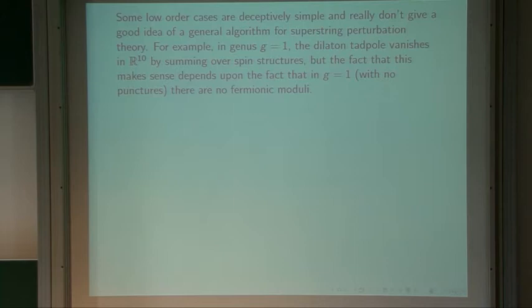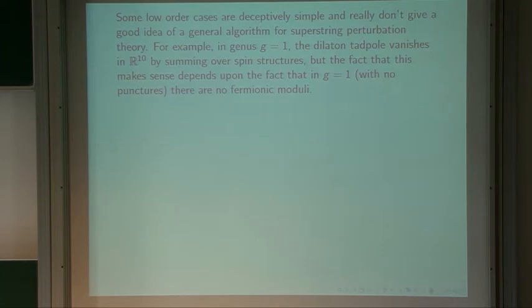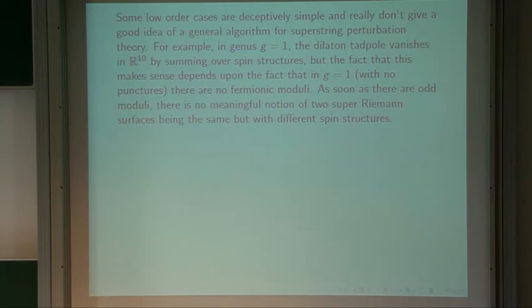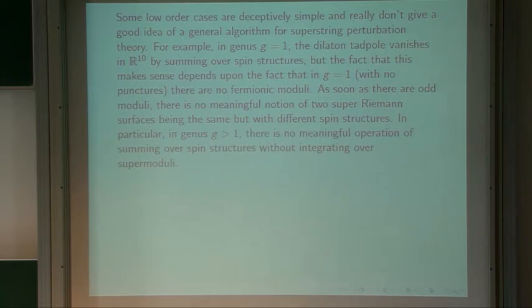For example, in genus 1 for string theory in R^10, the dilatino tadpole vanishes by summing over spin structures — often expressed as the cosmological constant vanishing by summing over spin structures. The fact that this makes sense depends on the fact that in genus 1 there are no fermionic moduli. As soon as there are odd moduli, there is no meaningful notion of two super-Riemann surfaces being the same but with different spin structures. In particular, in genus bigger than 1 there's no meaningful operation of summing over spin structures without integrating over supermoduli.